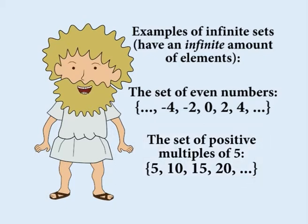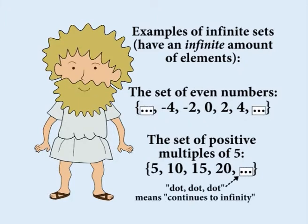It isn't possible to write down all of the elements of an infinite set, because there are too many of them. So instead, the symbols dot dot dot are used to show the set continues to infinity.